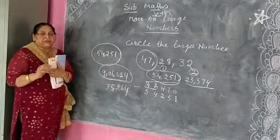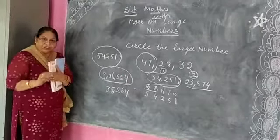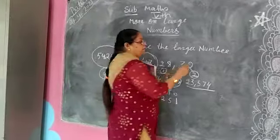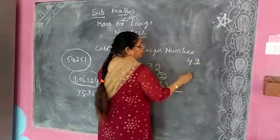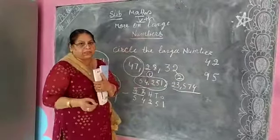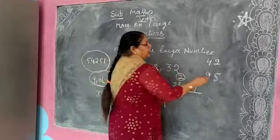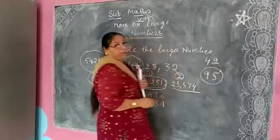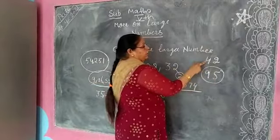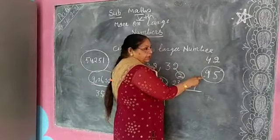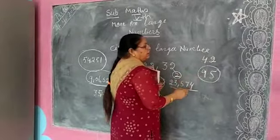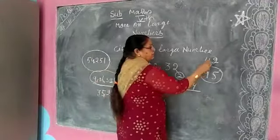So guys, this is the larger number. For example, if you have 42 and 95 — you have done this in 1st and 2nd class — immediately you can say 95 is larger. How? The ones column is 2 and here the ones column is 5, but the tens column is 4 here and 9 there. So the tens column determines the larger number. 95 is larger than 42.